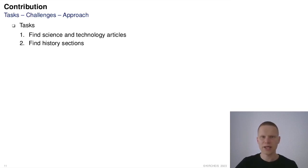We are therefore looking at two main tasks: one, finding articles on science and technology in Wikipedia, and two, finding history sections within these articles. We are facing a few challenges here though.